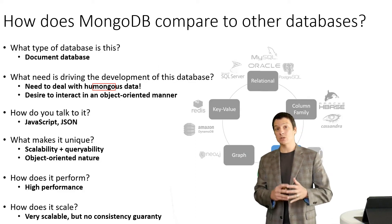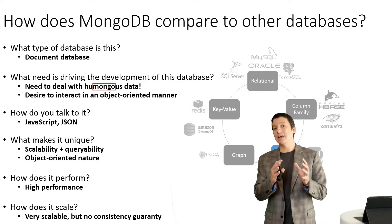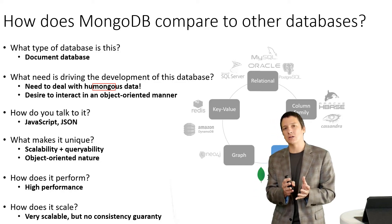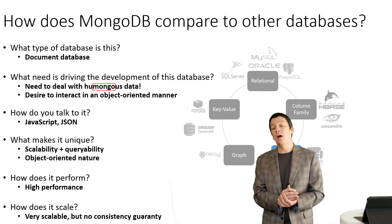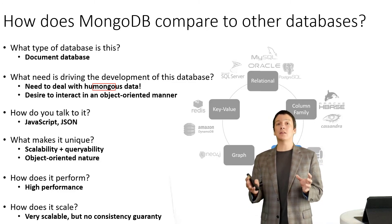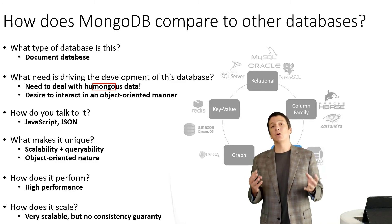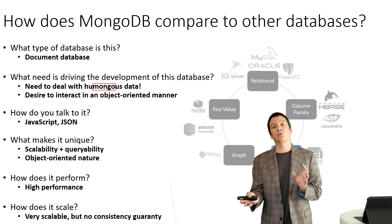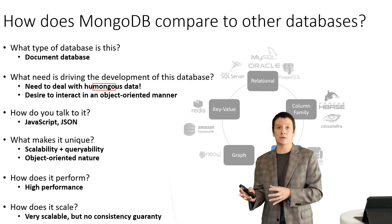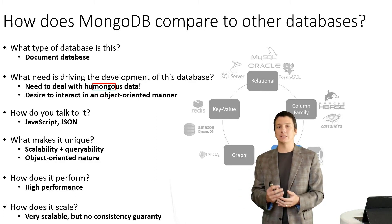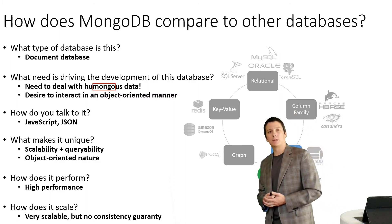Unlike HBase, which is also highly scalable, HBase has a shared disk architecture, meaning that it can give us a high guarantee of consistency. MongoDB is a shared-nothing architecture — it depends on replication between nodes over the network in order to synchronize data between different nodes in your MongoDB cluster. So we get eventual consistency, but we don't have strong consistency like we did with HBase.